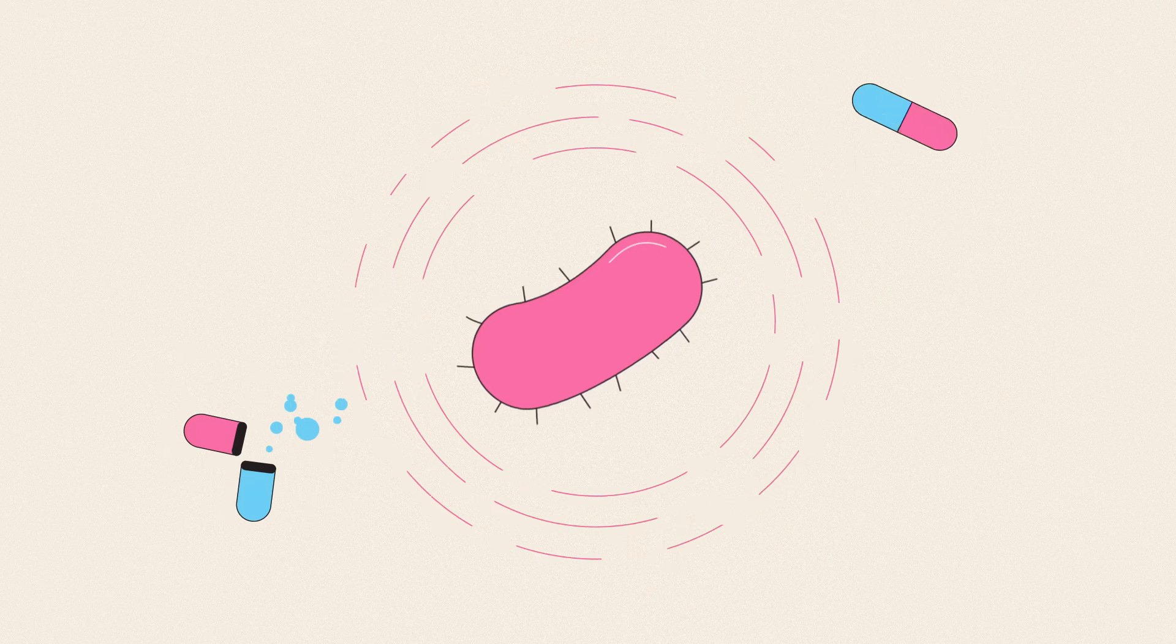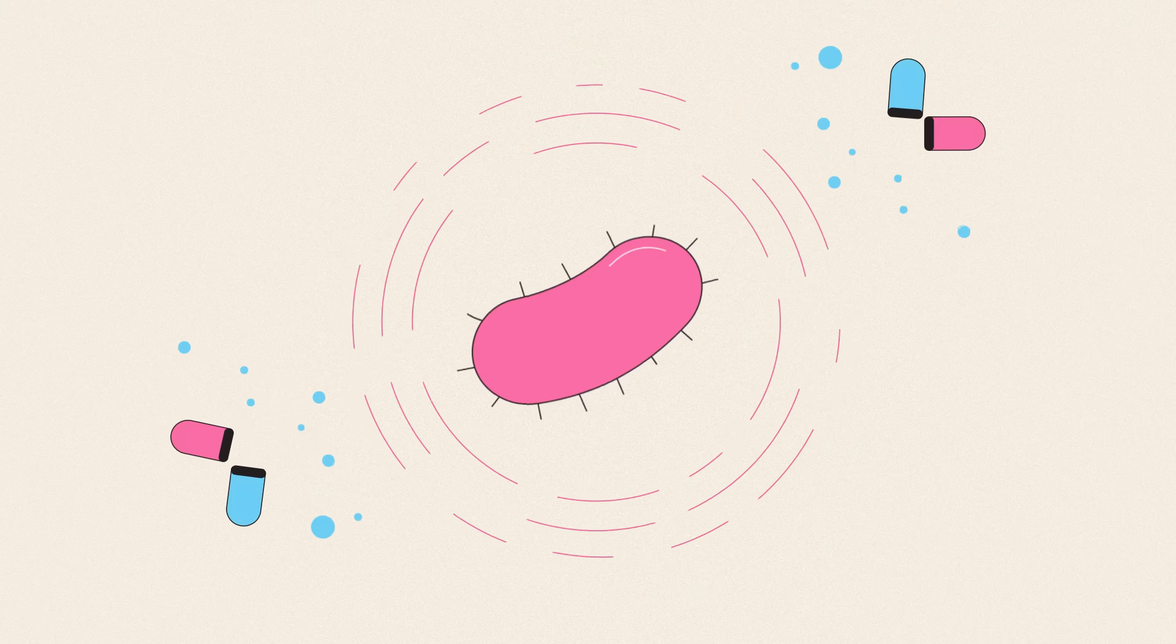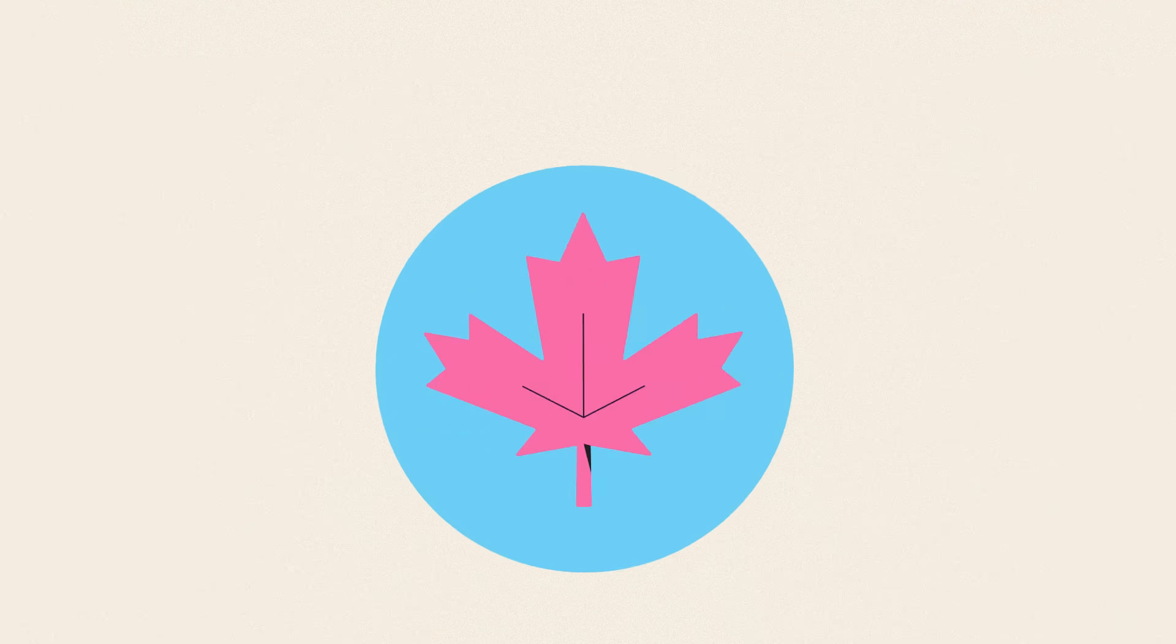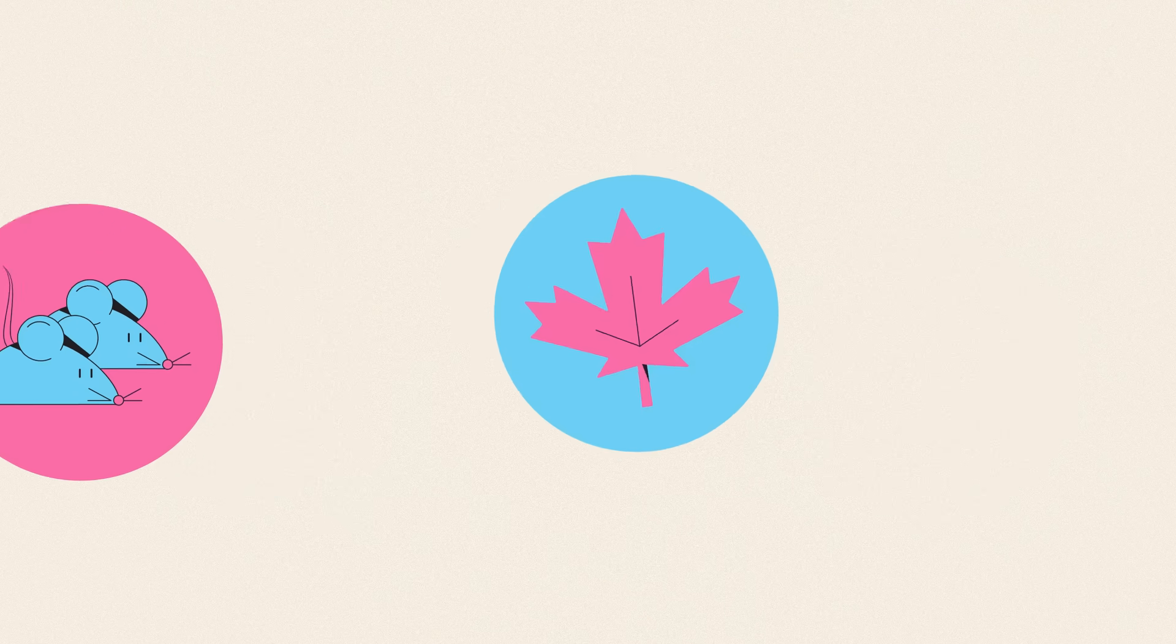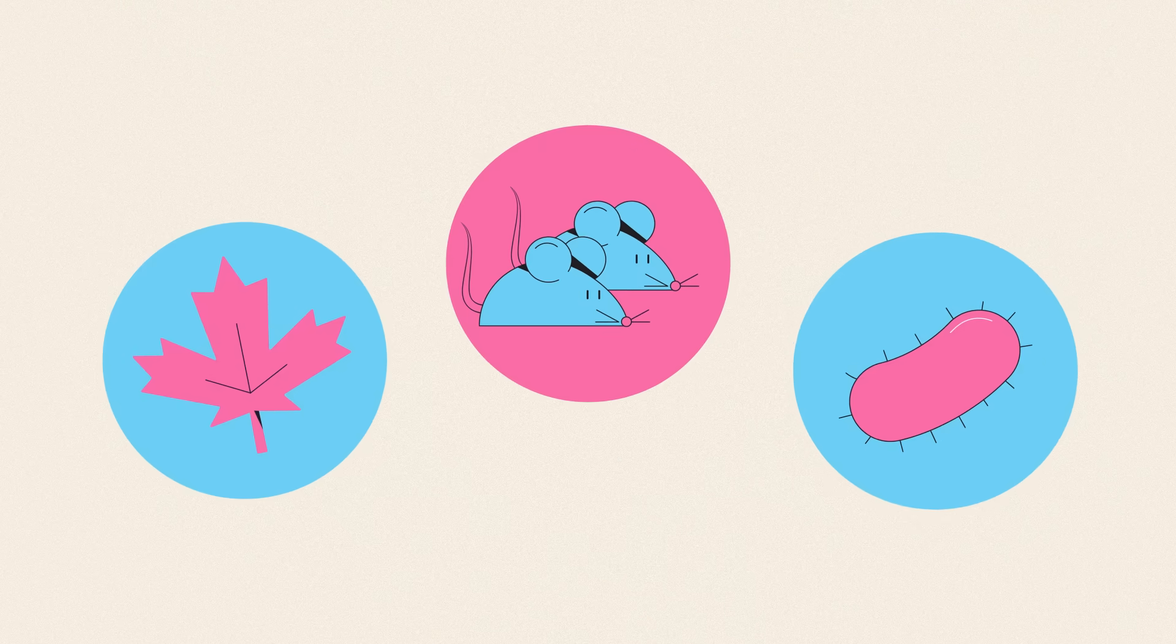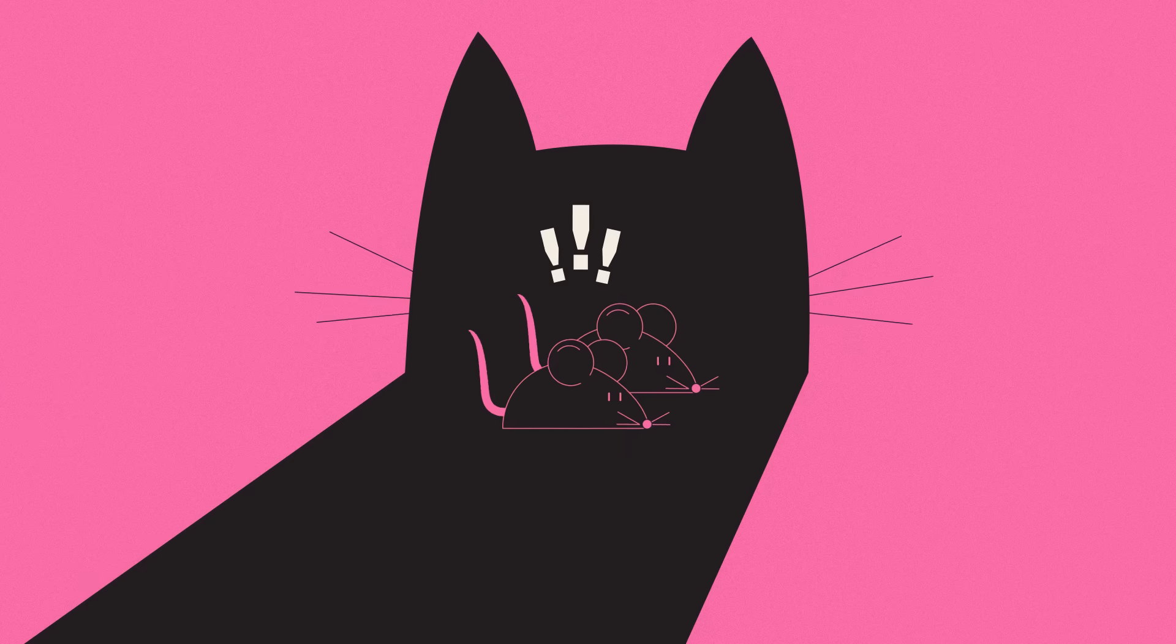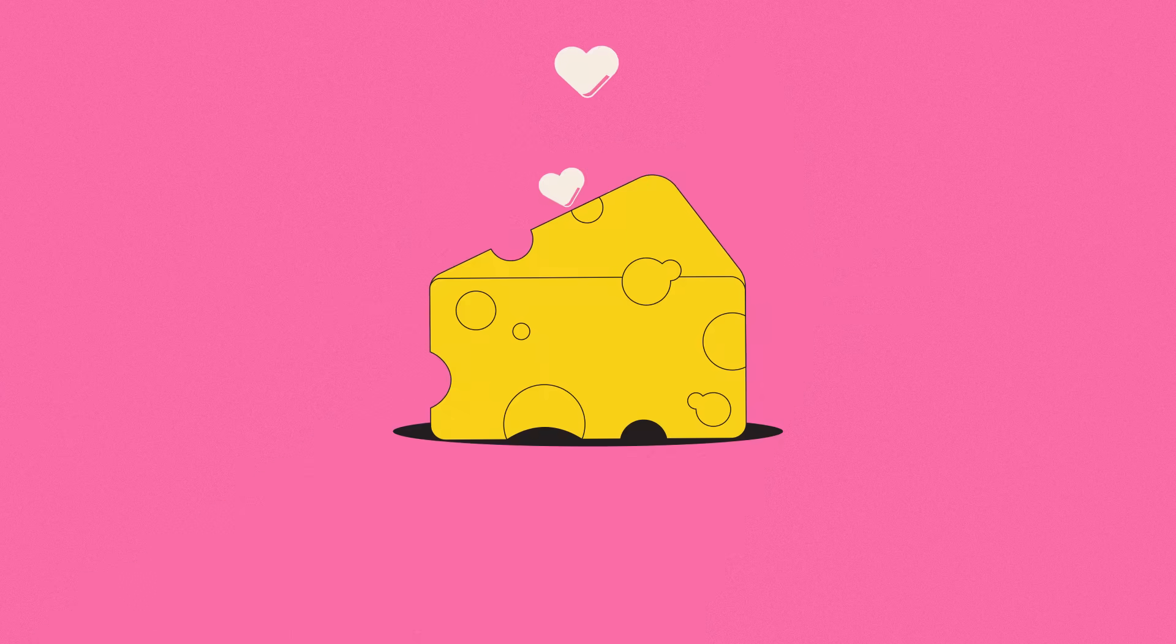So why are bacteria becoming resistant to antibiotics? Put simply, natural selection. Fundamentally, all living creatures, from maples to mice to microbes, are doing the same thing: competing for resources and trying to avoid being killed long enough to reproduce and spread their genes.